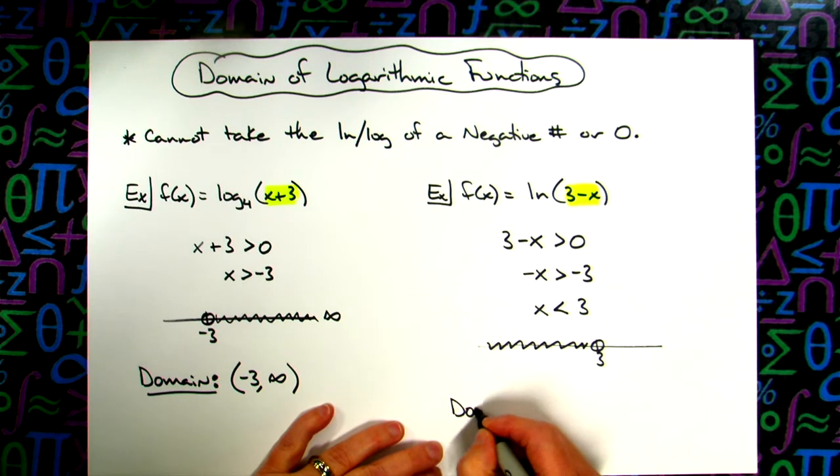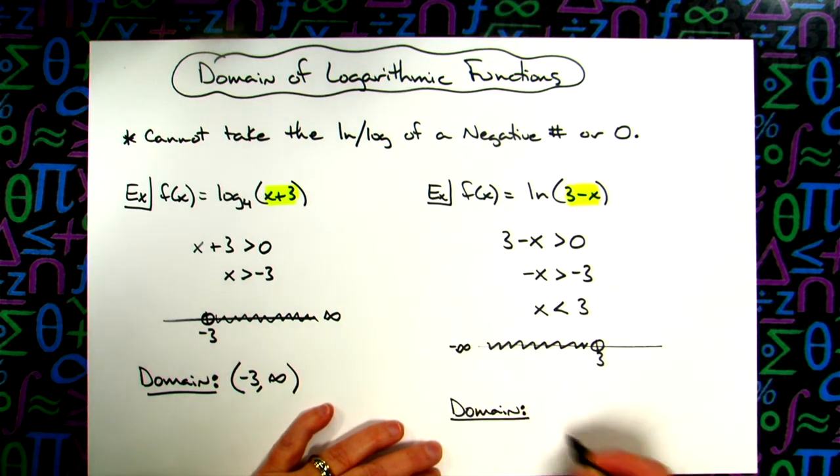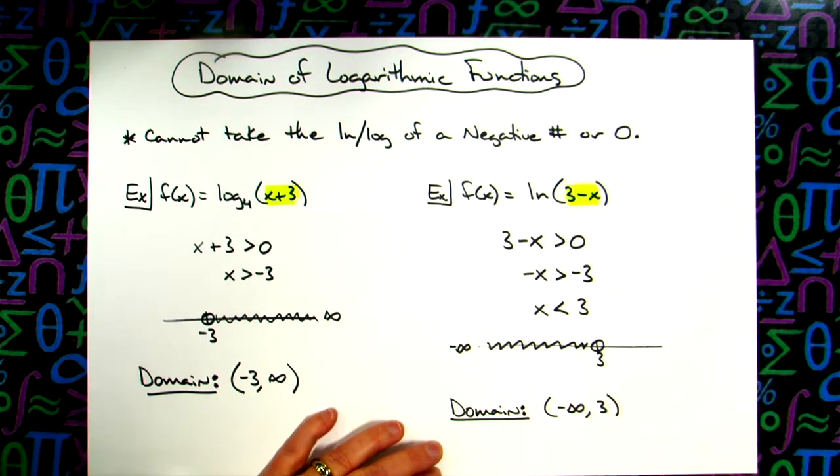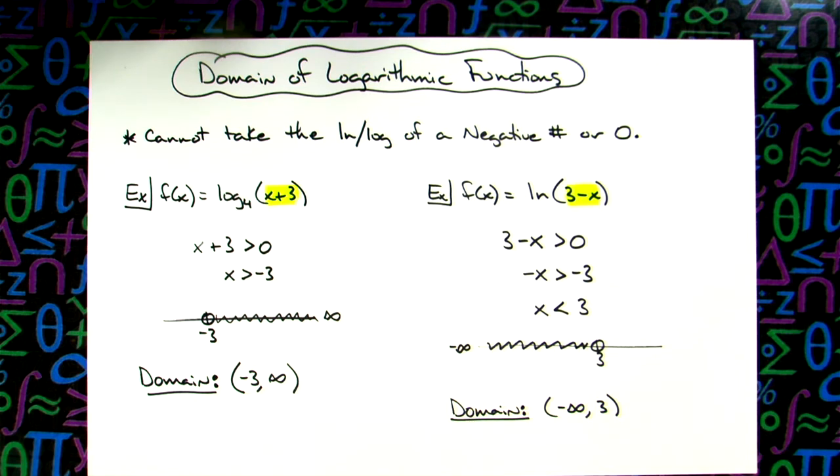So the domain in interval notation then is going to be with negative infinity all the way down here. It will be negative infinity all the way up to 3 with a curvy bracket because we don't want to include that 3.